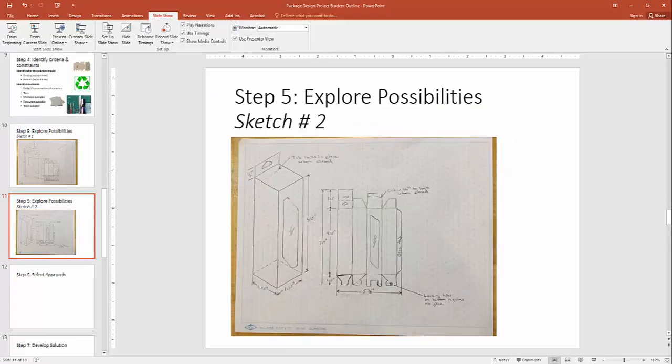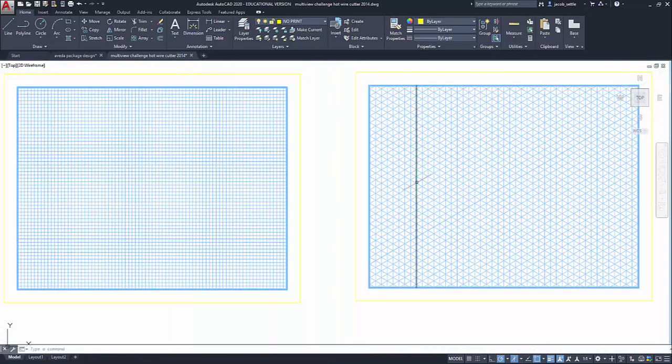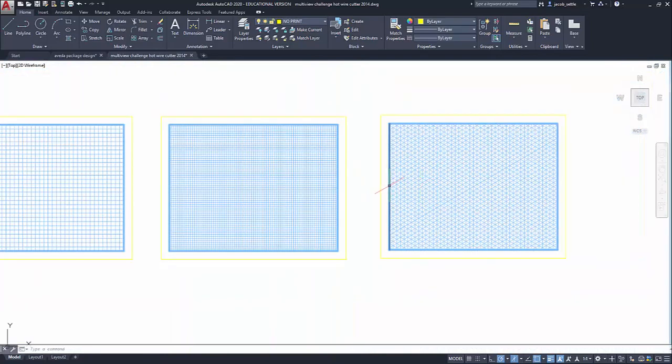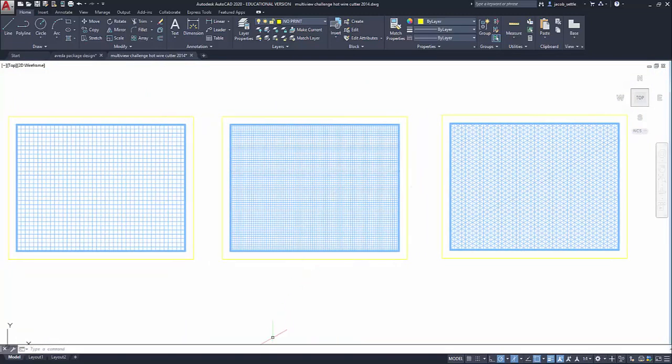Now looking, I did post three different graph papers that I just drew up in CAD. You can print these out. So there's quarter-inch grid, eighth-inch grid, and this is an isometric if you want to use that for your pictorial sketch. Again, you can use plain graph paper or plain paper, but these are available for you.